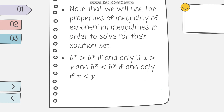In solving for the solutions of our logarithmic and exponential inequalities, we have to take note of some properties. b raised to x is greater than b raised to y if and only if x is greater than y. And b raised to x is less than b raised to y if and only if x is less than y. It's like the one-to-one property, but we're just changing the symbol to inequality symbols. For example, 2 raised to x plus 1 is greater than 2 raised to 3. Since the bases are the same, you can get their exponents and apply the same inequality, so this will be x plus 1 is greater than 3.